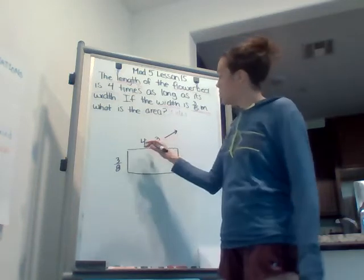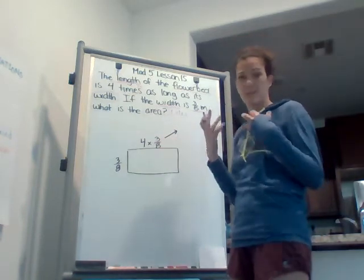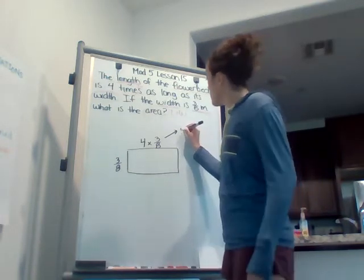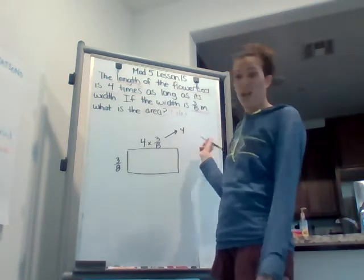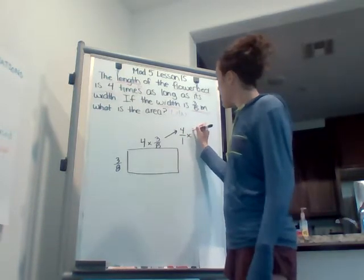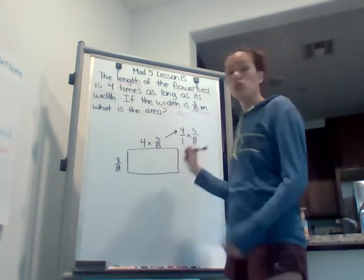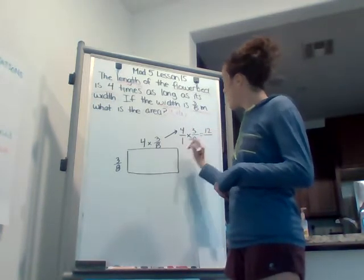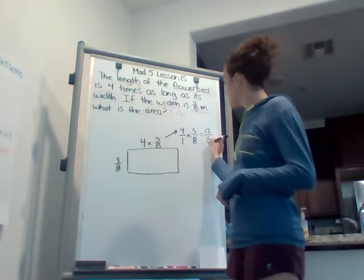For those of you who maybe forgot, I know that it's been going well with everyone I've worked with, but if we're multiplying fractions, 4 is like saying 4 over 1, right? That's 4 times 3 eighths. And with multiplication, it's super simple. We just multiply across. So 4 times 3 is 12, and 1 times 8 is 8.